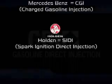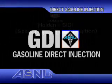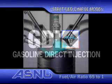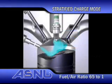The GDI system has two running modes: Stratified and Homogenous. Stratified Charge Mode is the economical combustion cycle. In some systems, the air to fuel ratio can be as high as 65 to 1.